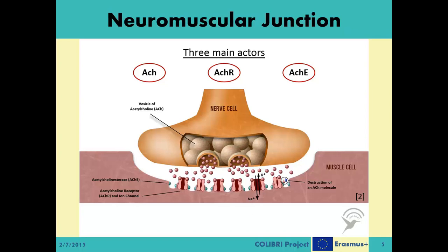Not all ACH molecules are received by the receptors. Normally, these unreceived molecules stay in the NMJ and cause interference for future signals. To eliminate these surplus ACH molecules, a third type of chemical construct called ACH esterase molecules resides inside the junction. These secondary molecules interact with and destroy the ACH molecules into their acetyl and choline parts, which cannot form a chemical reaction with the ACH receptors on their own. Looking from a communication point of view, these esterase molecules practically clean the channel for future signals.